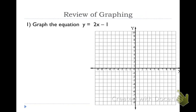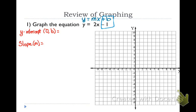Before we get going on this, I want to do a very fast review of graphing in general. When you have an equation and you want to graph it, the first thing you're going to do is make sure it's in slope-intercept form. All the equations you'll do first will be in slope-intercept form. Remember that is y equals mx plus b, and you are going to identify two things: the y-intercept, which is your b value. In this particular equation it is negative one — you always pick up the sign in front of the number. So my y-intercept is (0, negative 1).